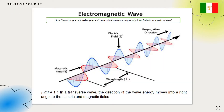As you can see in the picture, an electromagnetic wave is made up of an electric field and a magnetic field positioned at right angles to each other and to the direction of motion of the wave.